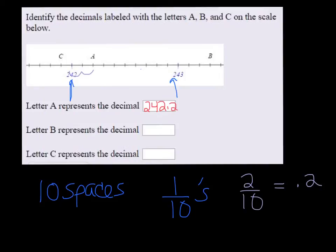The letter B is definitely going to be 243 point something. It is 1, 2, 3 hops to the right, so it's going to be 0.3.